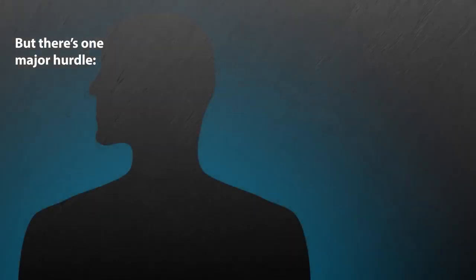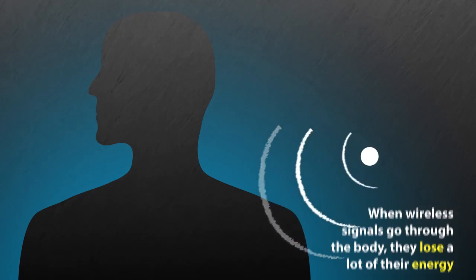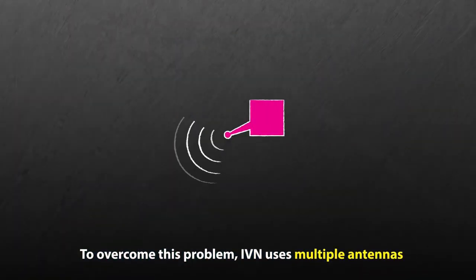But there's one major hurdle. When wireless signals go through the body, they lose a lot of their energy. To overcome this problem while transmitting signals that are safe for humans, IVN uses multiple antennas.